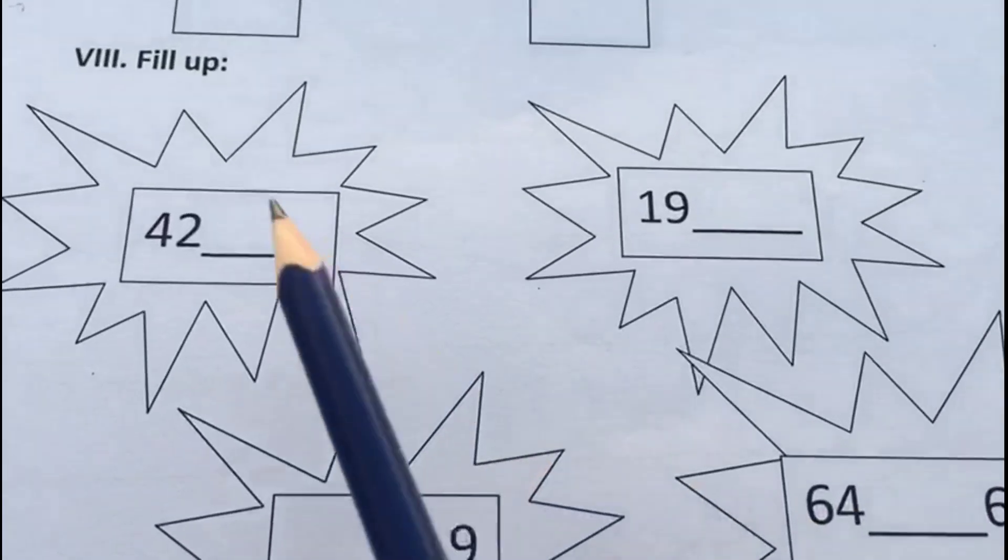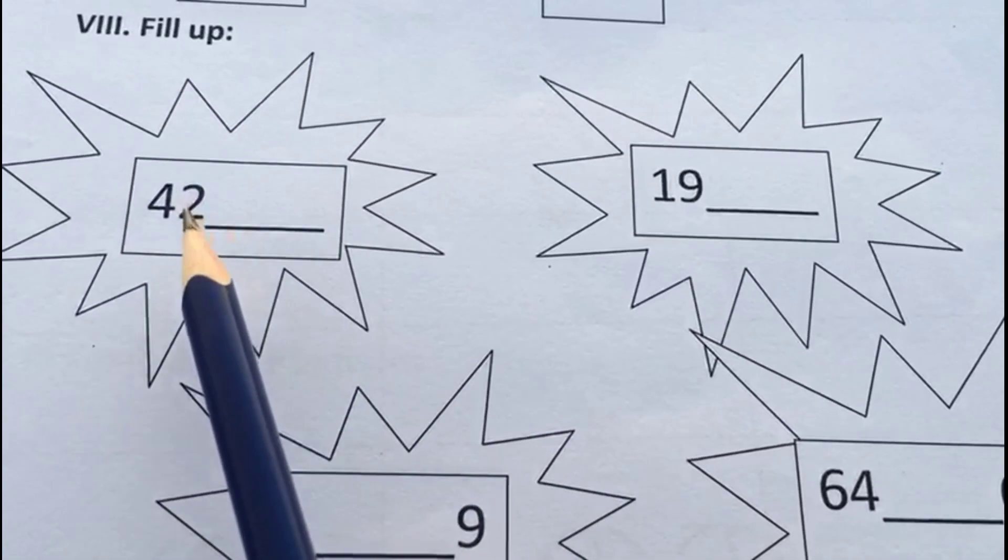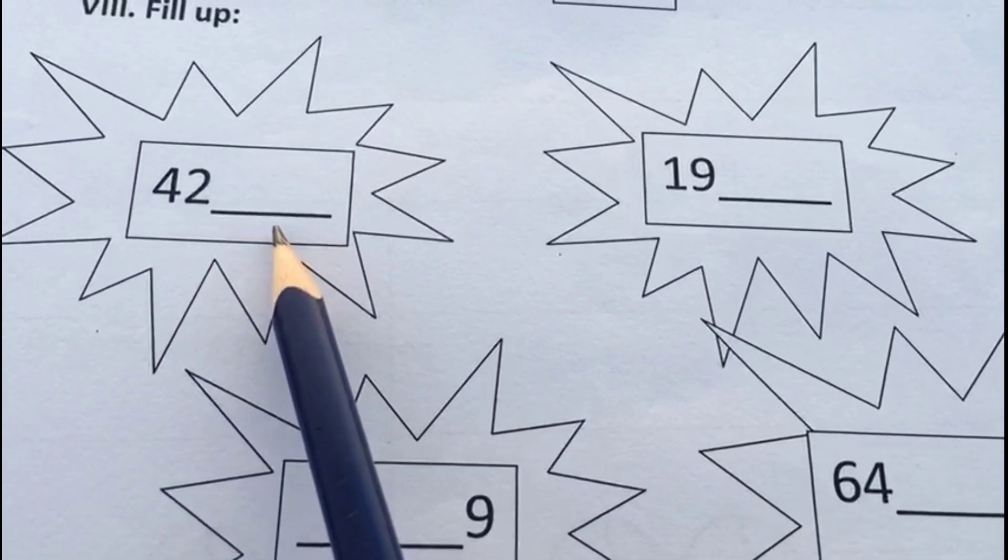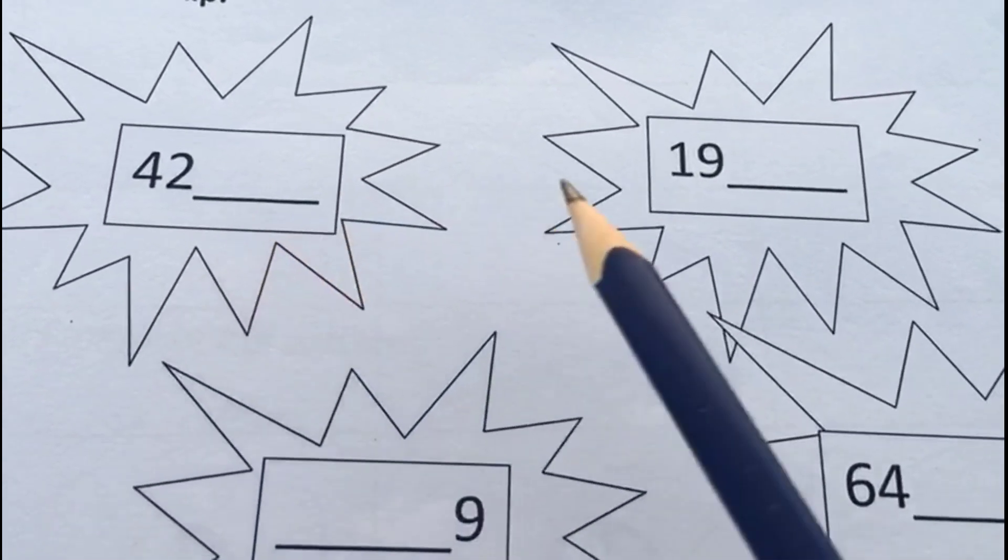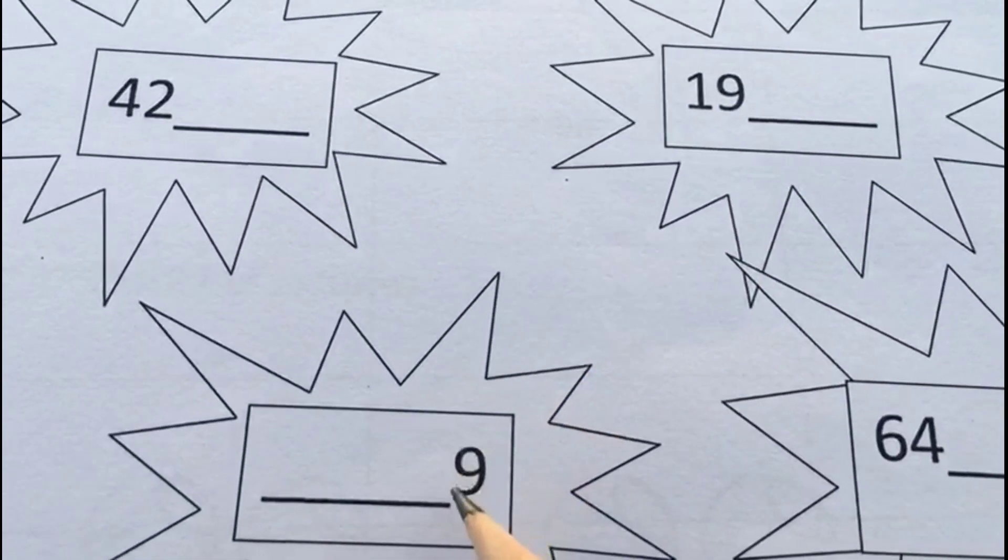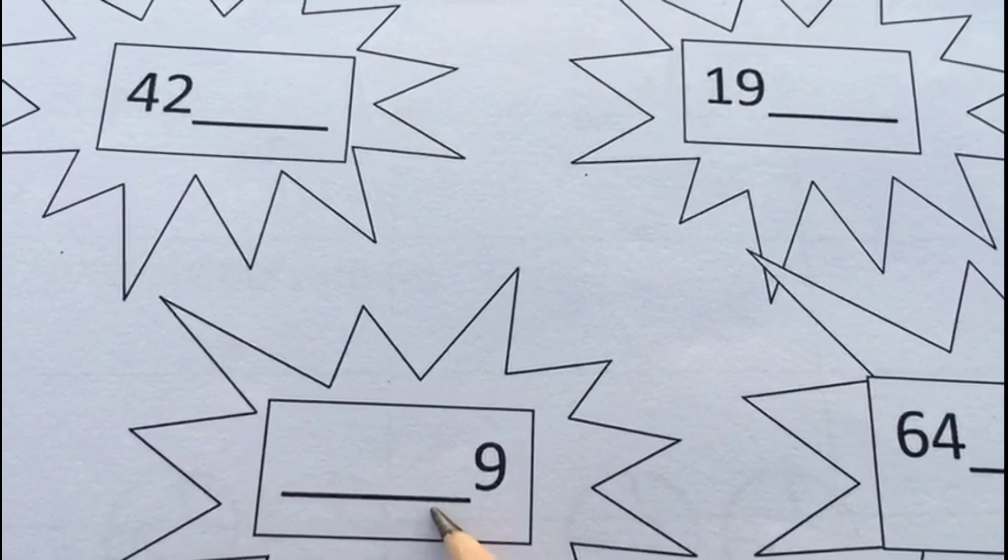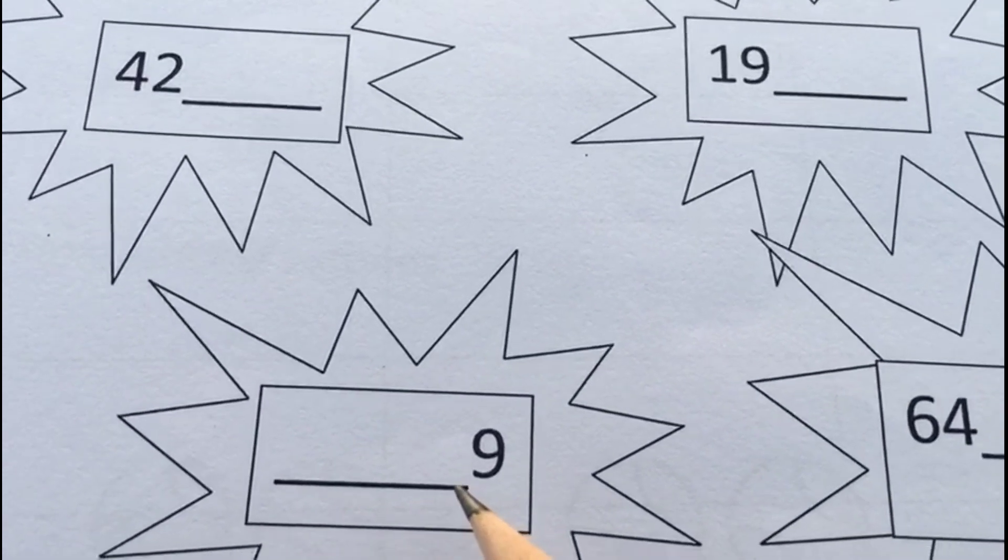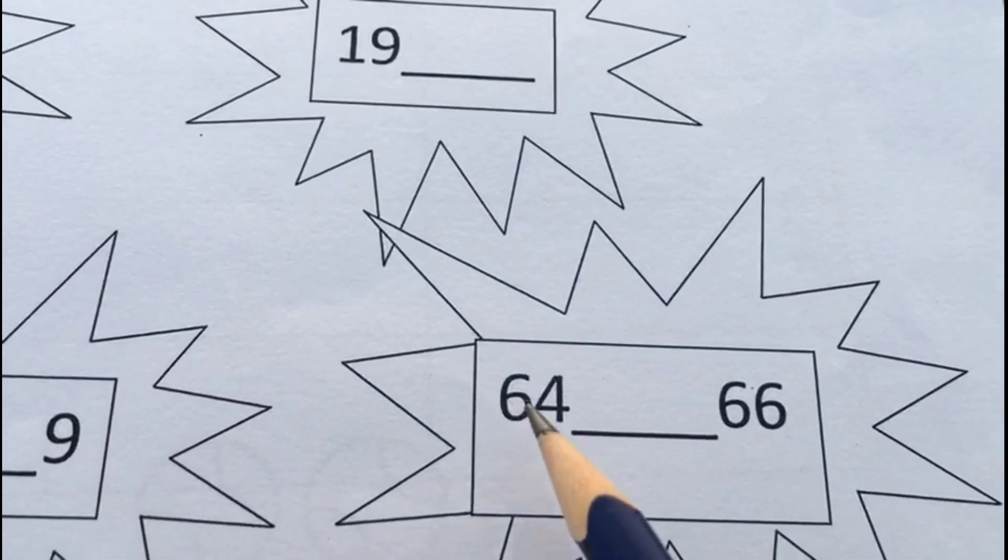This is our eighth question: fill ups. This question is based on after number, before number, and between number. So ask your child to find out the after number of 42, 19, and before number of 9, and between number of 64 and 66.